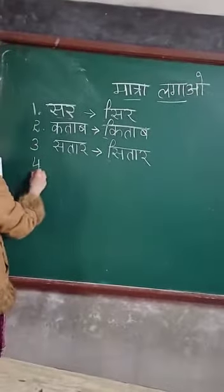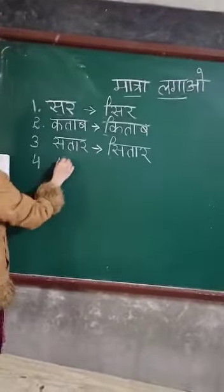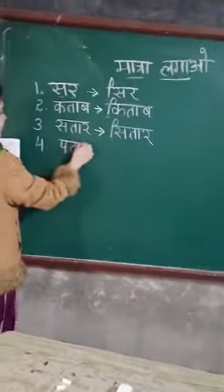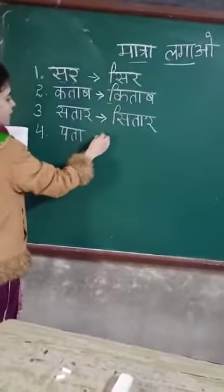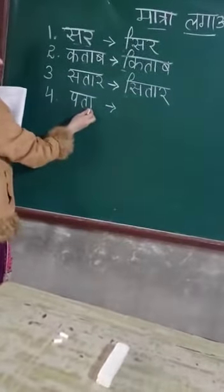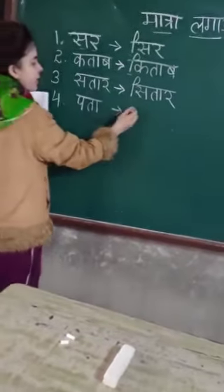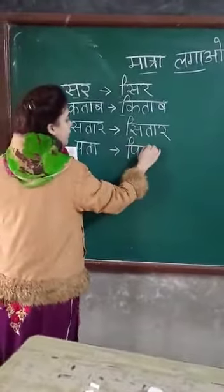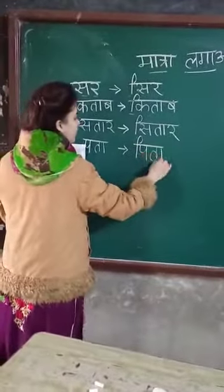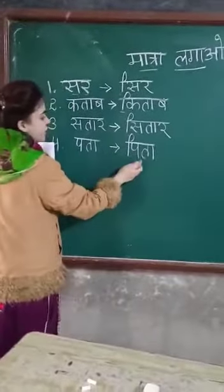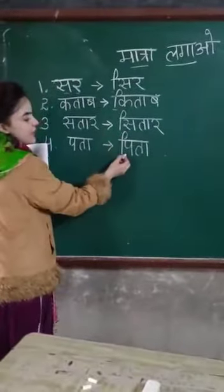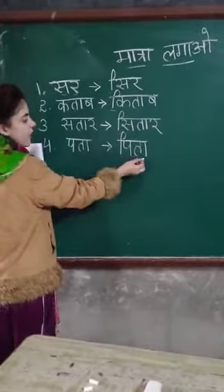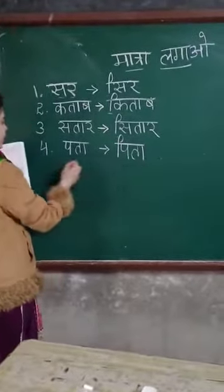Now our fourth word is Pa, ta, ko, a — pata. Pa, ta, ko, a — pata. Now we are going to change it — pita. Okay? Now we are going to change this word into pita. Pa, ko chhoti ee — pi, ta, ko, a — pita. Okay?